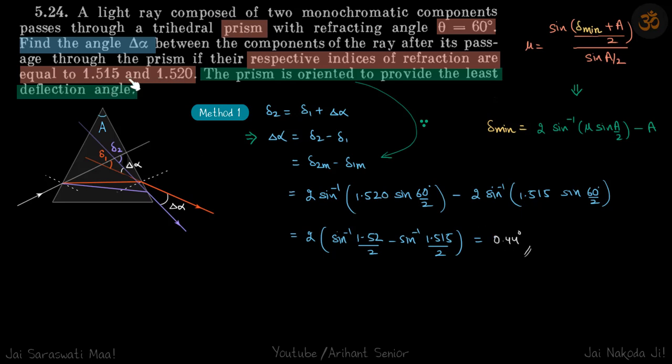But here we can see that the difference in mu is not much. So we need this value delta two M minus delta one M. So if you see here, mu and delta min are related, A is a property of the prism, so it's a constant. Mu is variable and delta minimum is variable.